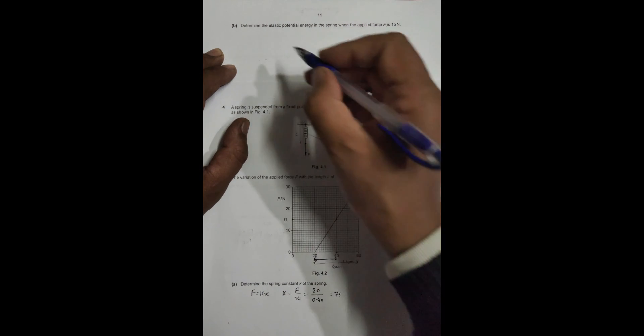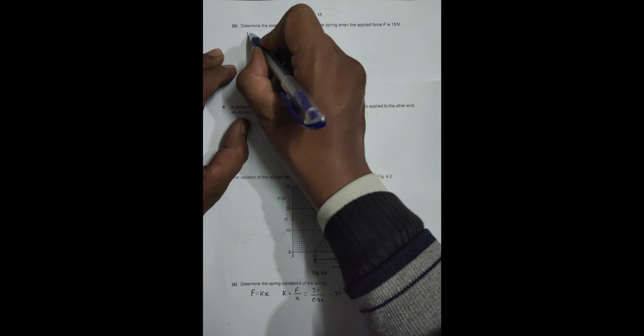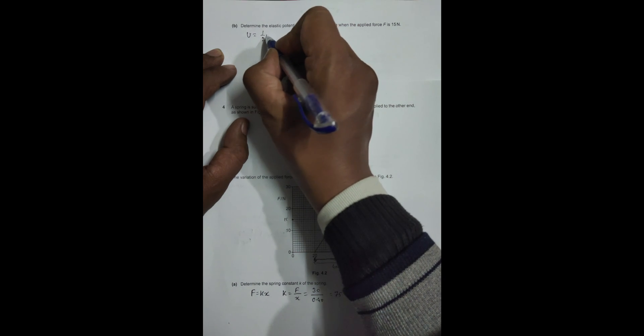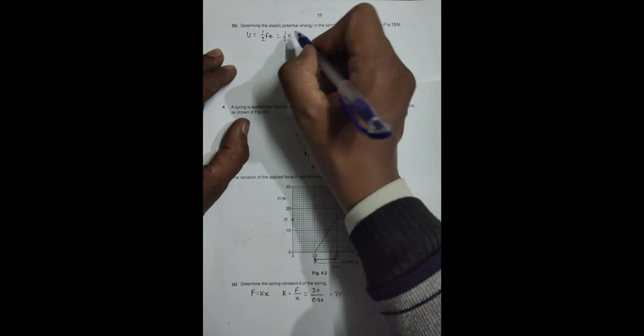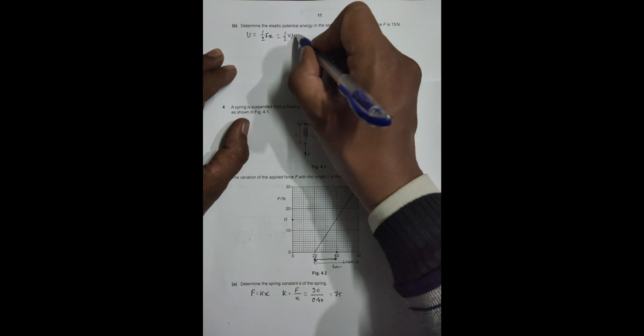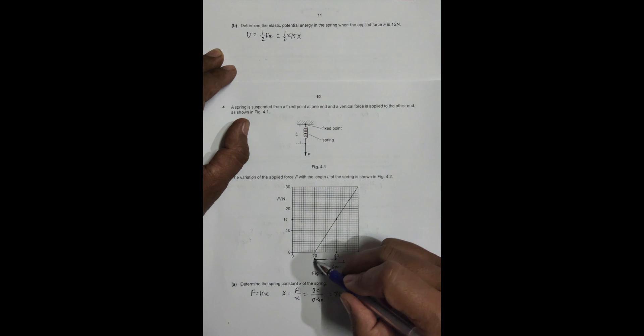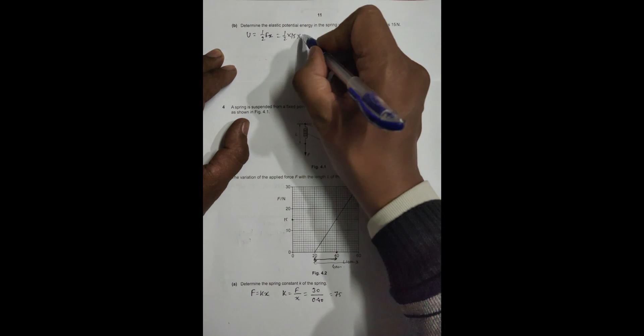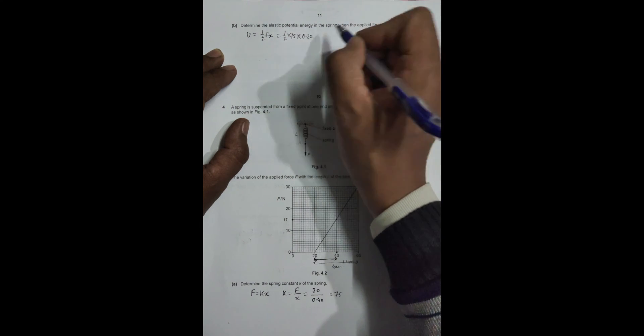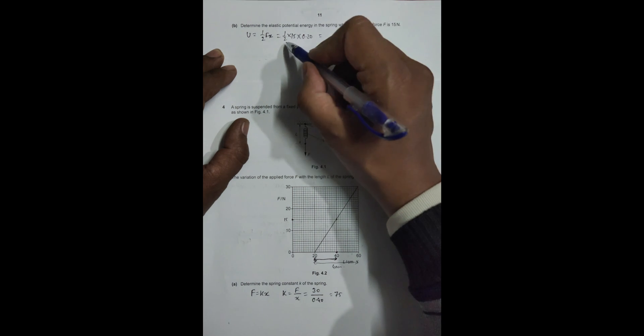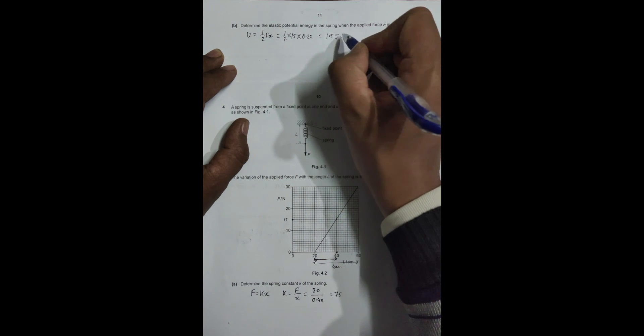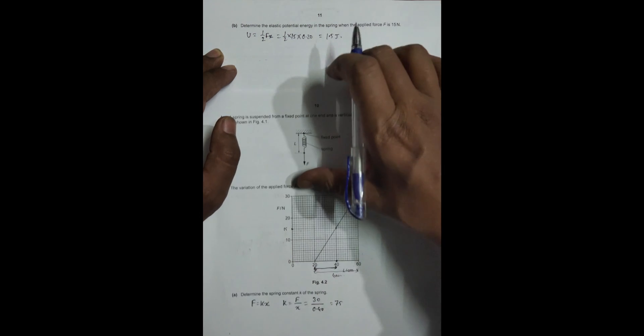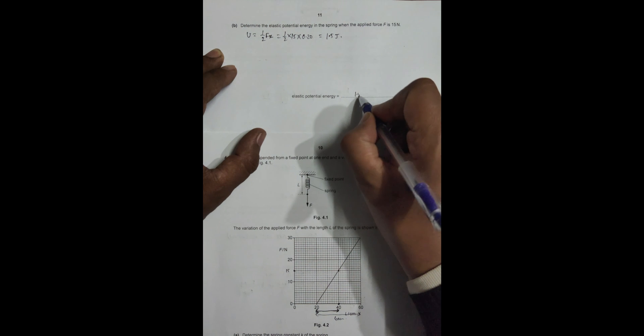The elastic potential energy equals 1/2 times F times the new extension. So 1/2 into the new force, which is 15, into the new extension, which is 20 centimeters, equal to 0.20 meters. So it equals 1.5 joules. The answer is 1.5 joules.